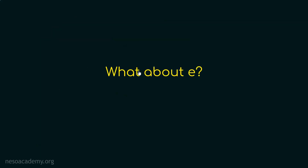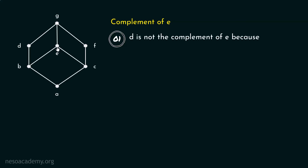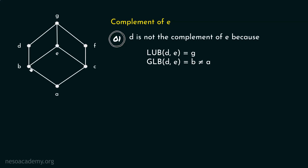But what about the complement of E? D is not the complement of E because the least upper bound of D and E is equal to G, but the greatest lower bound of D and E is equal to B, which is not equal to A. Hence, D is not the complement of E.